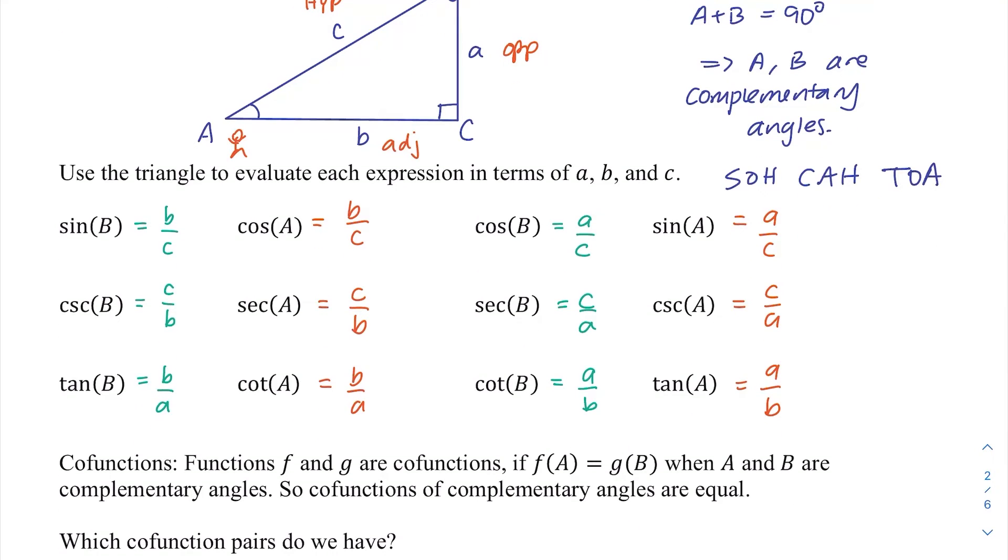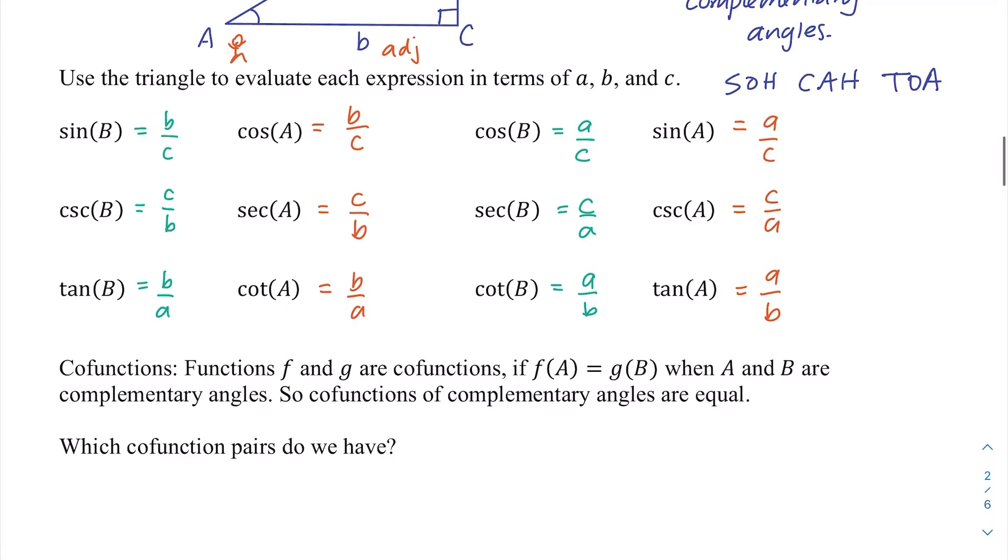We're going to look at some patterns, but first, this definition says functions F and G are co-functions if F of A equals G of B. That is saying that if A is an input for one and B is an input for the other, then the outputs of these different functions match. This is true when A and B are complementary angles. Complementary angles mean they add to 90 degrees. So co-functions of complementary angles are equal.